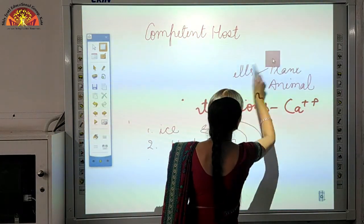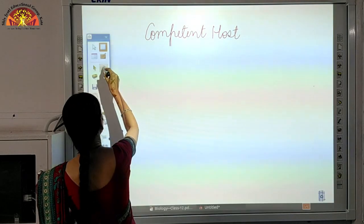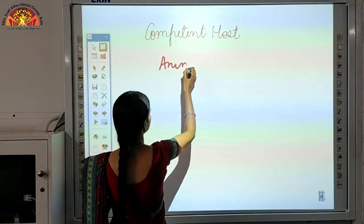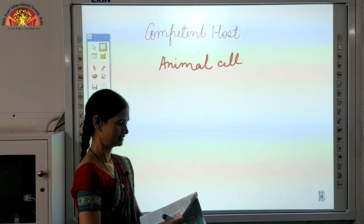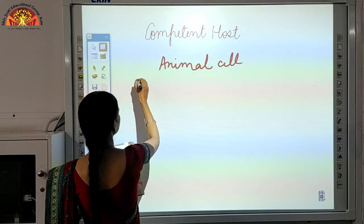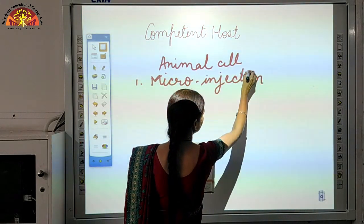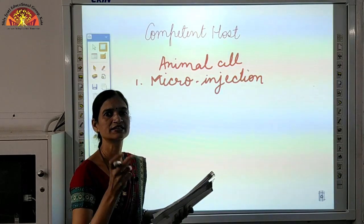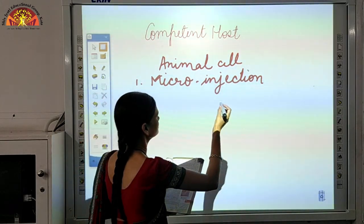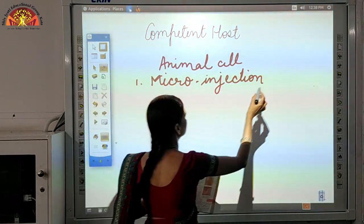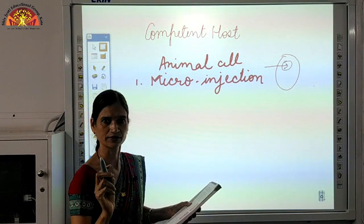Another method for making the host competent — particularly for animal cells — is microinjection. In microinjection, we directly inject the DNA into the nucleus of the cell. For example, if we consider an egg, which is also a single cell, we directly inject the DNA into its nucleus. This is called microinjection.